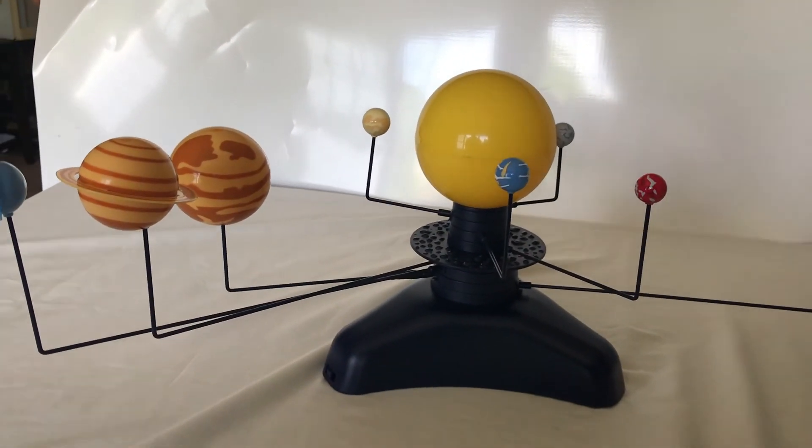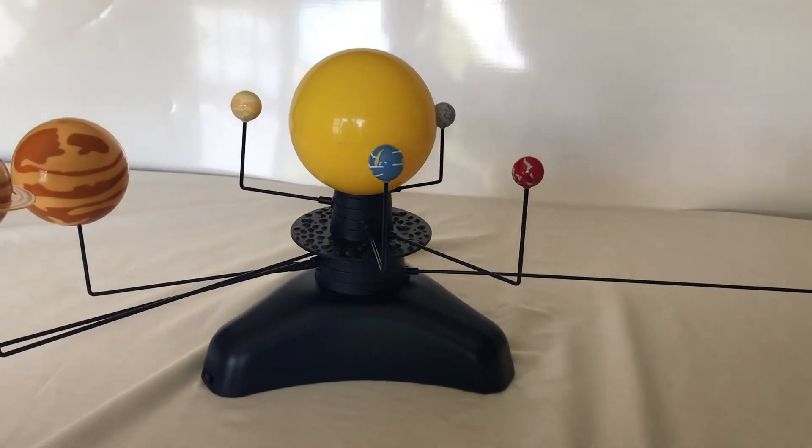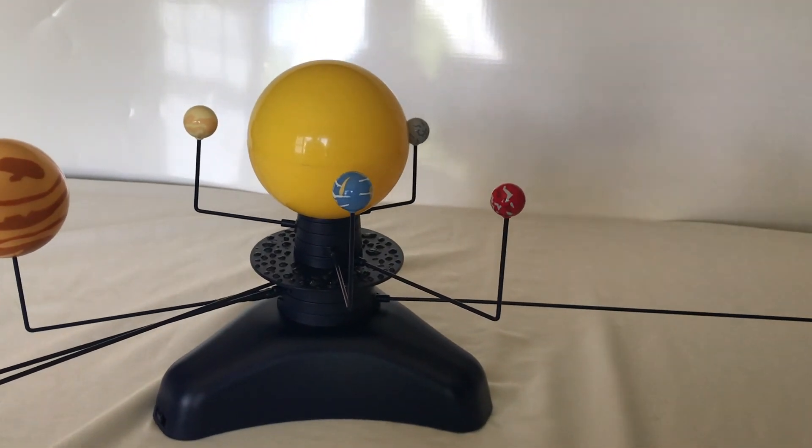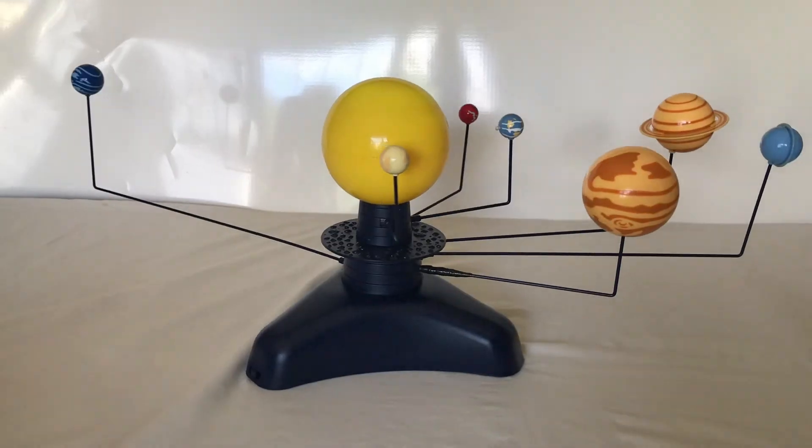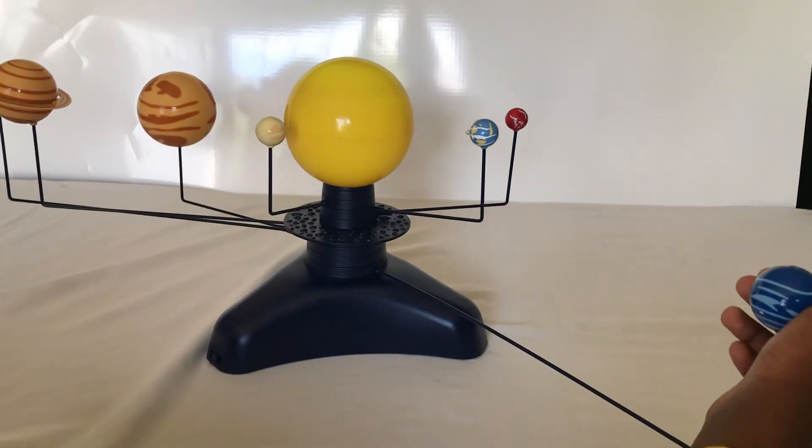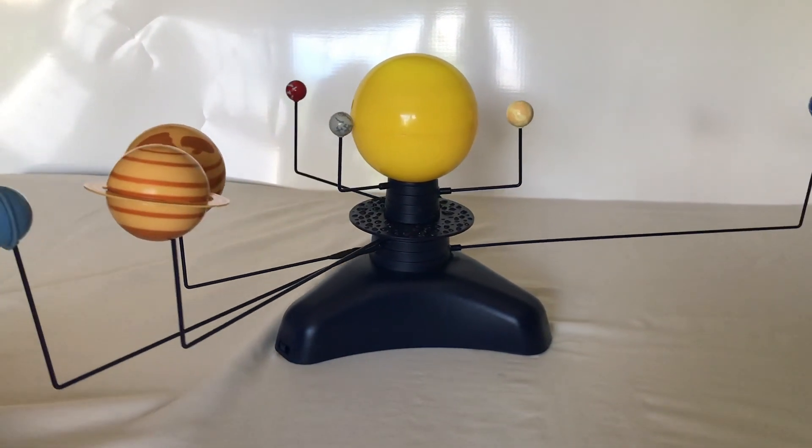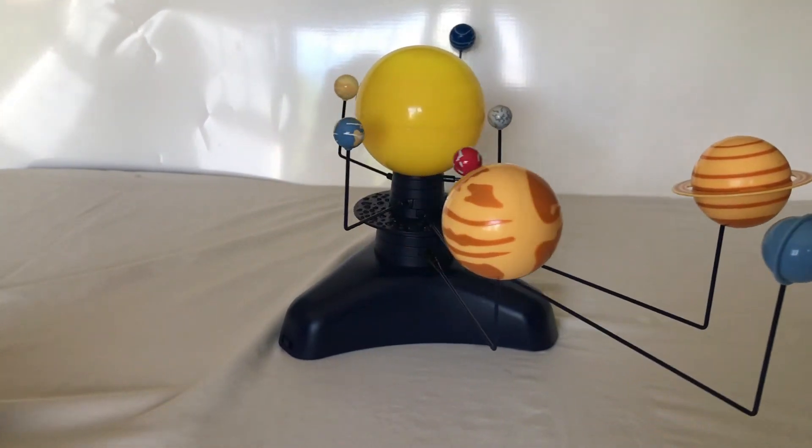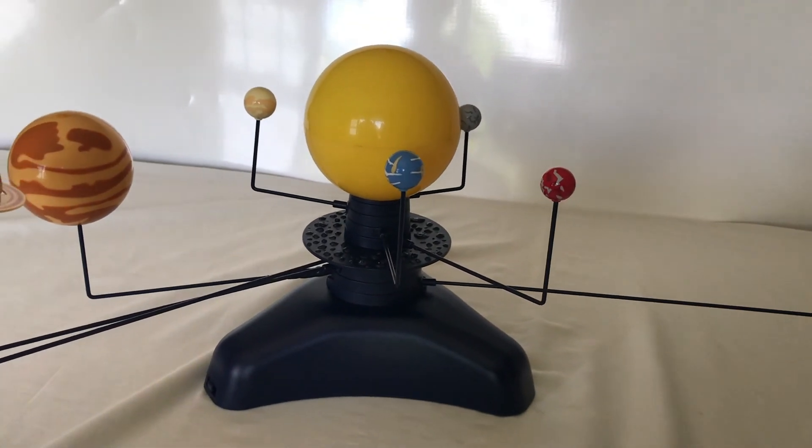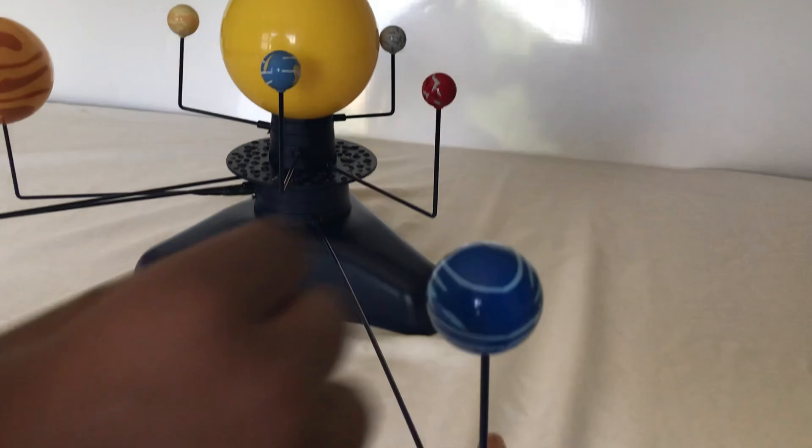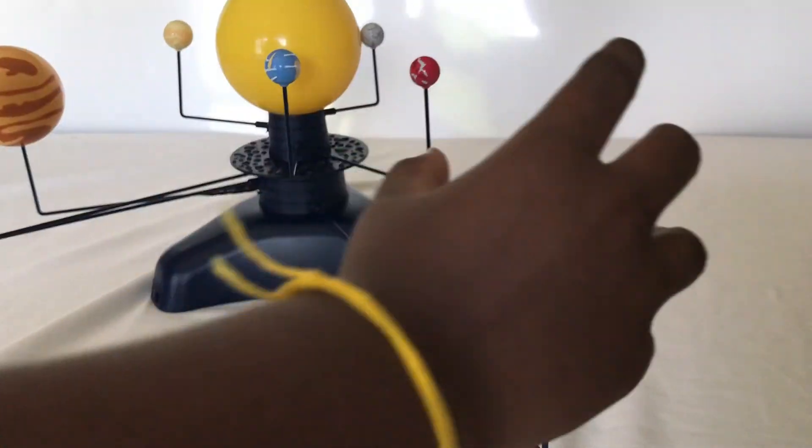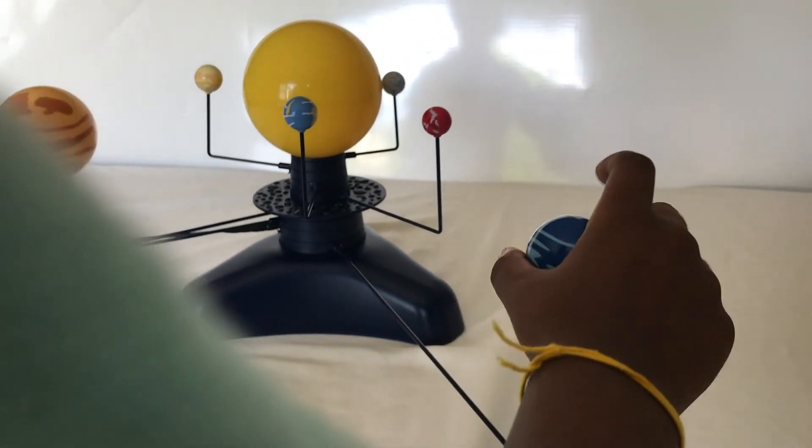Now for our last planet, Neptune. Neptune is a blue planet. It has some storms and is kind of an icy giant. Neptune is the eighth planet from the Sun. It has a lot of storms.